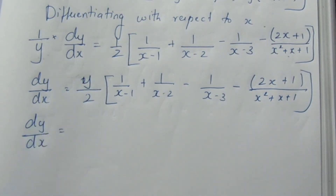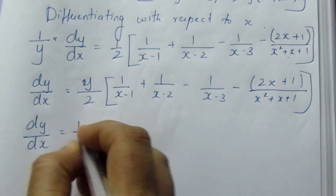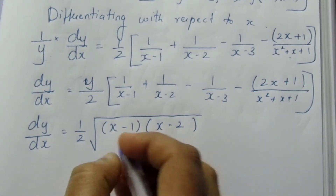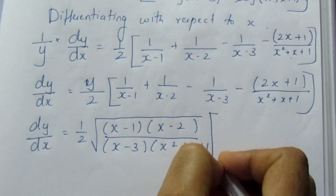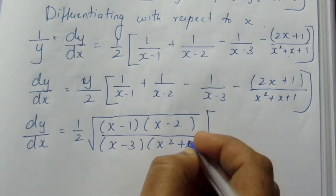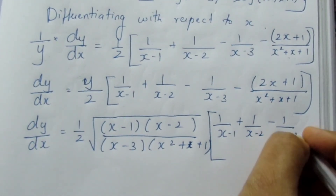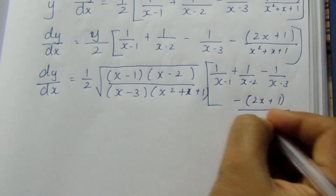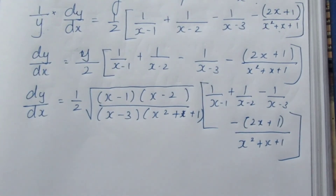Since y equals root of (x−1)(x−2) divided by (x−3)(x²+x+1), substituting back, the final answer is: dy/dx equals root of [(x−1)(x−2) / ((x−3)(x²+x+1))] times half times [1/(x−1) plus 1/(x−2) minus 1/(x−3) minus (2x+1)/(x²+x+1)]. That is the final answer for this sum.